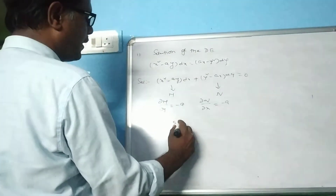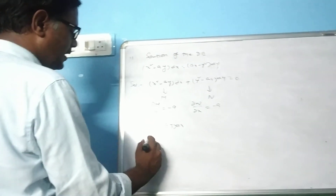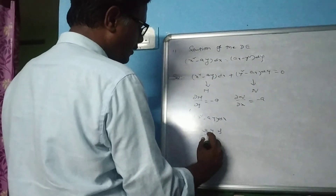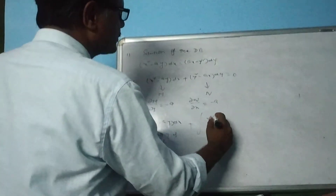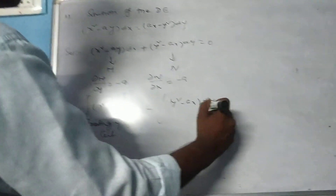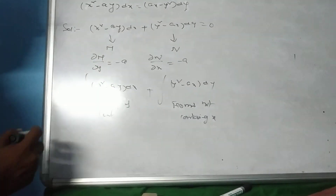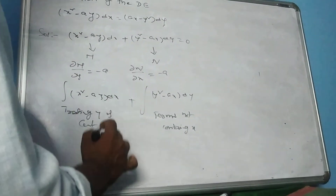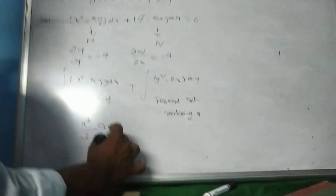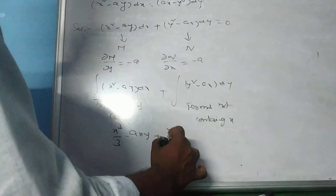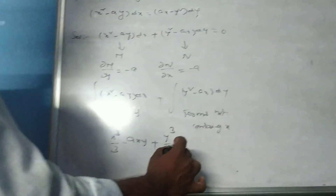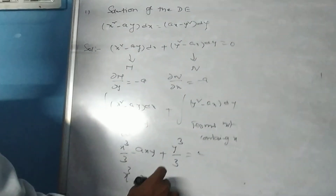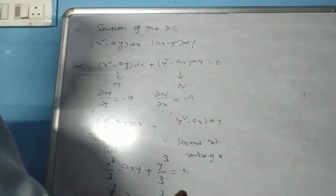Its solution is: integral of (x² - ay)dx treating y as constant, plus integral of terms in (y² - ax) not containing x. Integrating x² gives x³/3; with y constant, -ay integrates to -axy. Terms not containing x give y³/3. Therefore, x³/3 - axy + y³/3 equals C, or x cube minus 3axy plus y cube equals C is the required solution.